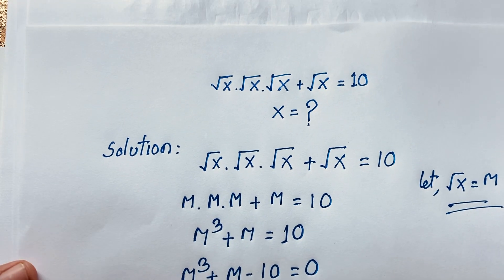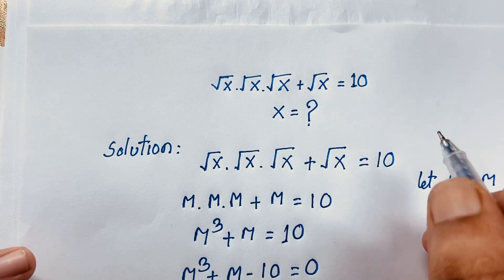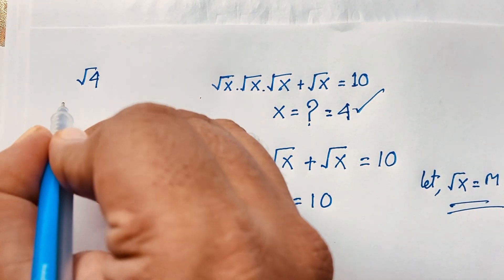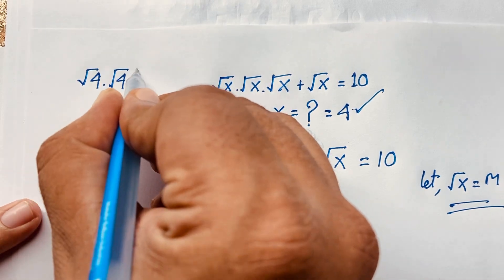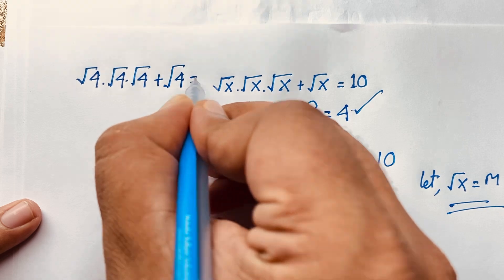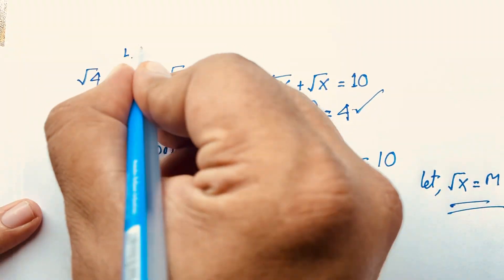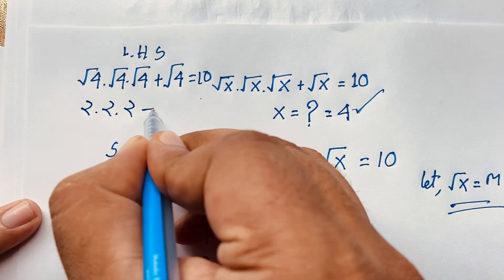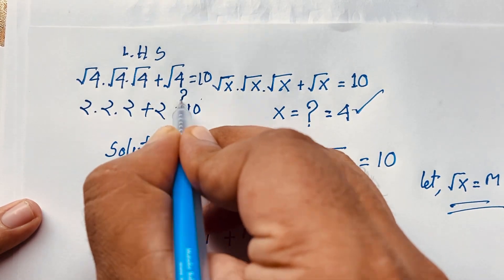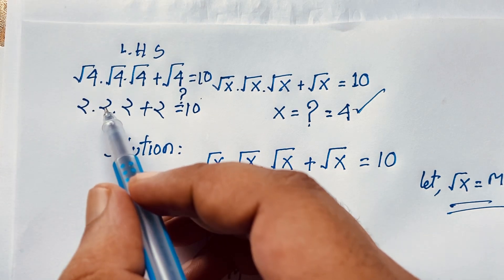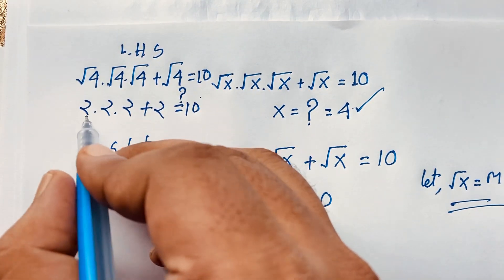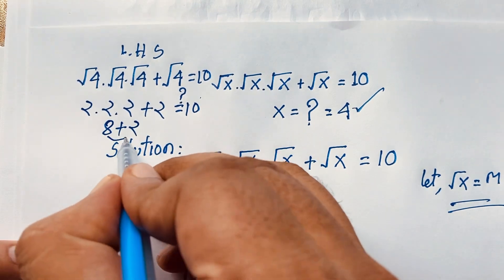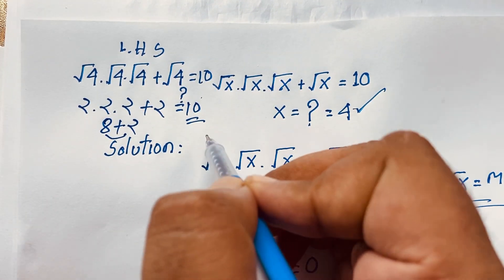Let's verify: substituting x equals 4 into square root x times square root x times square root x, plus square root x, equals 10. We get square root 4 times square root 4 times square root 4, plus square root 4 — which is 2 times 2 times 2, plus 2. That equals 2³ plus 2, which is 8 plus 2 equals 10. Left-hand side equals right-hand side. Verified!